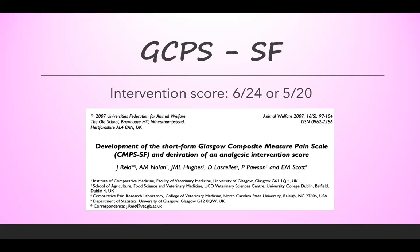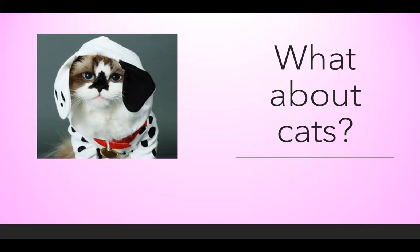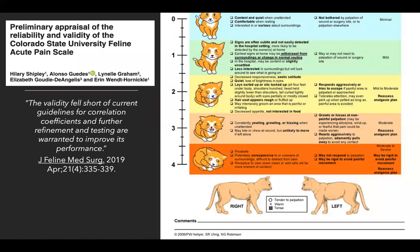What about cats? All the scales discussed, except for the unidimensional scales, apply to dogs. There is a Colorado State University version of a feline pain scale, but it was never intended to be a validated pain scale. A group at Minnesota looked at this scale to assess its validity, and unfortunately the validity fell short of current guidelines for correlation coefficients — meaning observer A and observer B probably didn't get similar enough answers as to whether an animal was painful — and further refinement and testing are warranted.